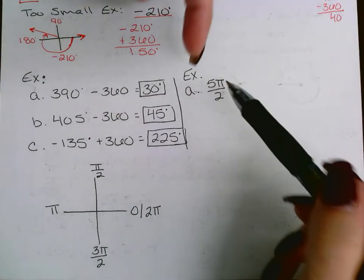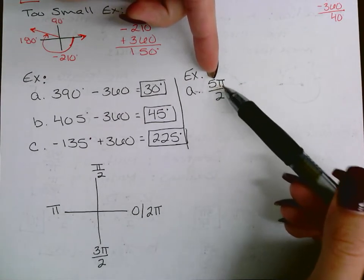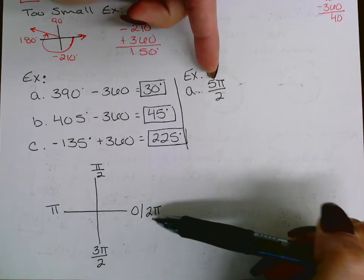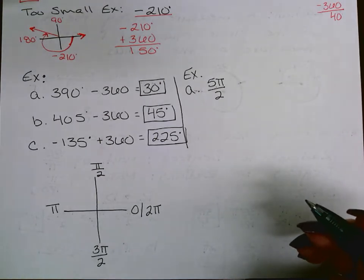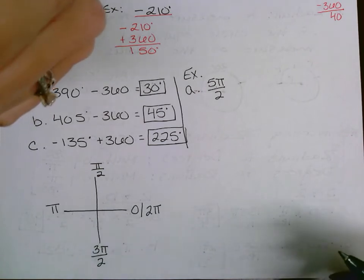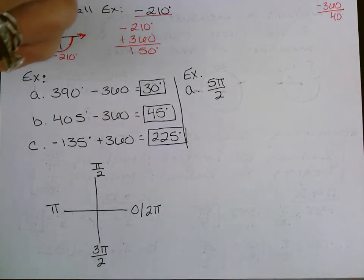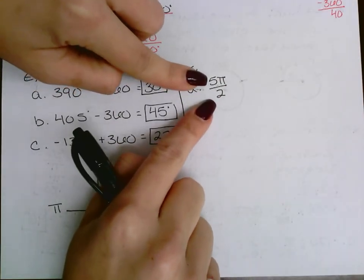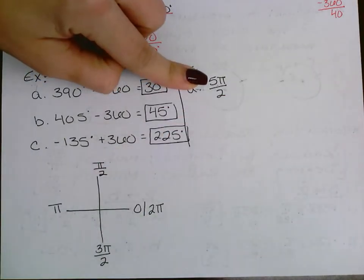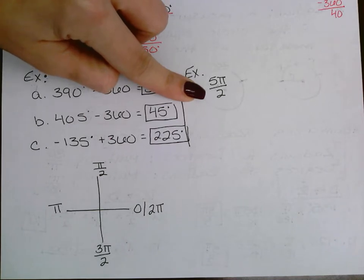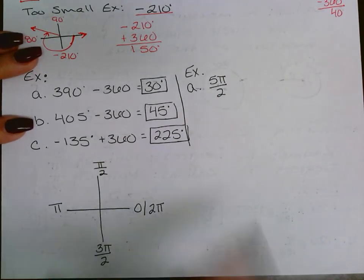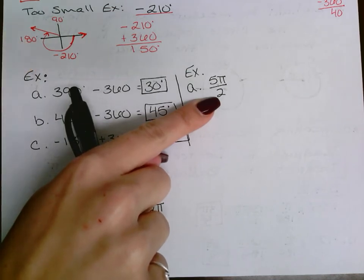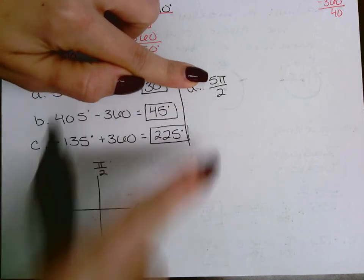A quick check: if the numerator is more than double the denominator, the fraction is greater than 2, meaning it's past 2 pi and you must subtract. For 5 pi over 2: the denominator is 2, double that is 4, and 5 is bigger than 4 — so subtract 2 pi. Get a common denominator: 5 pi over 2 minus 4 pi over 2 equals pi over 2.